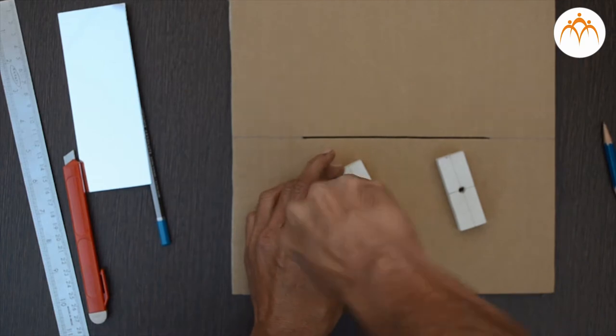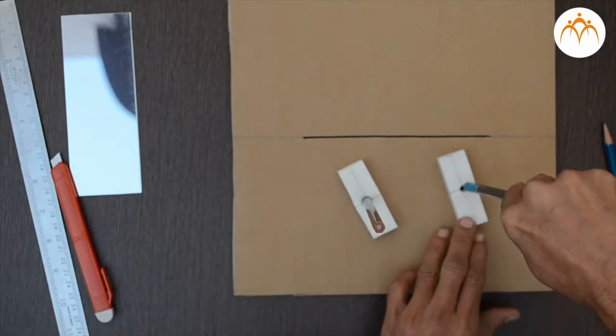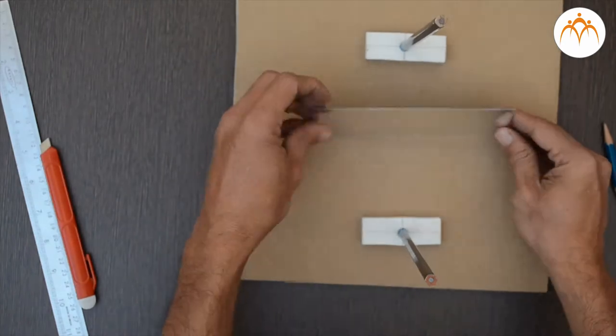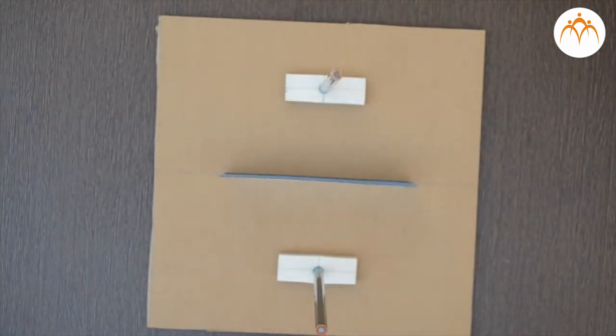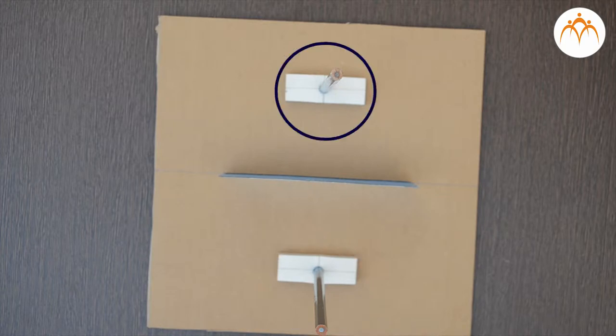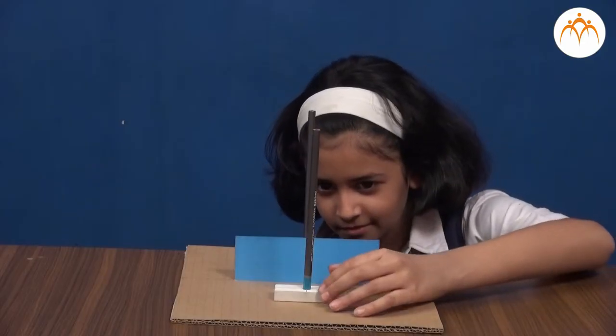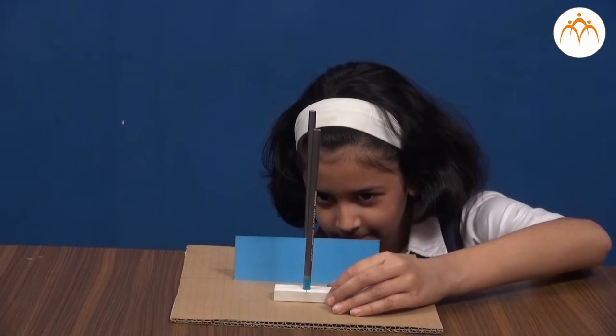Let's find out the location of an image of the pencil using this activity. We will investigate the manner in which light from an object travels to our eyes. Two pencils are taken and inserted into erasers which act as stands. A small mirror is placed on the table. One pencil will act as the object pencil and the other one as the image pencil. The object pencil is placed in front of the mirror. Let's try to keep the image pencil on the other side of the mirror.